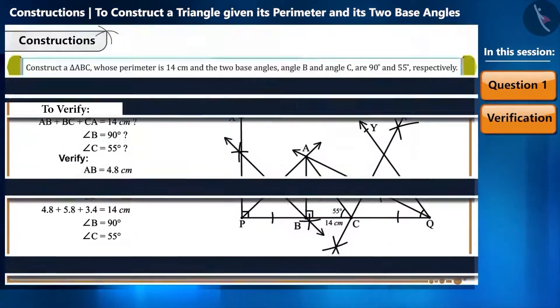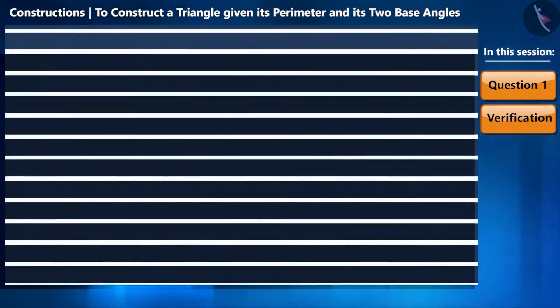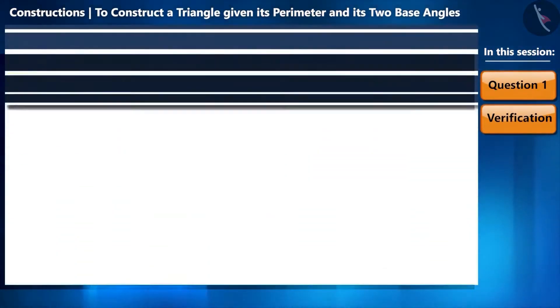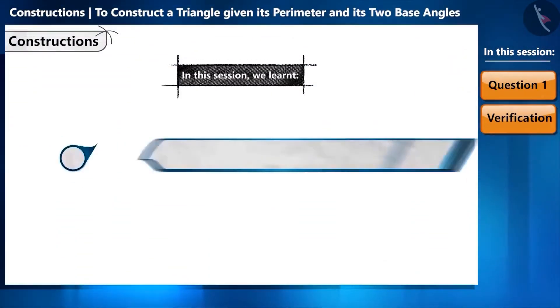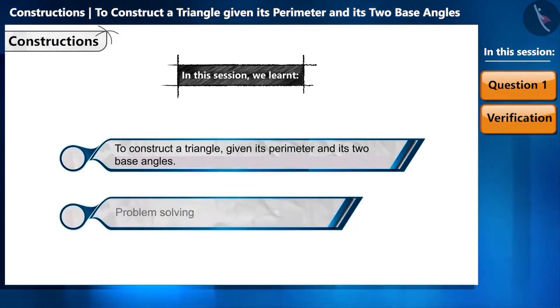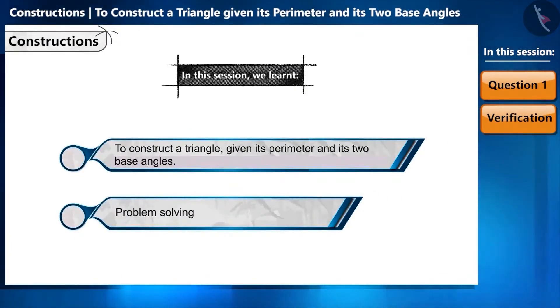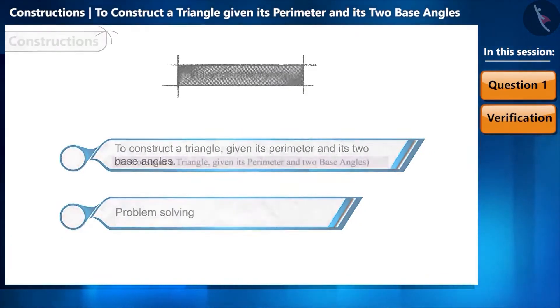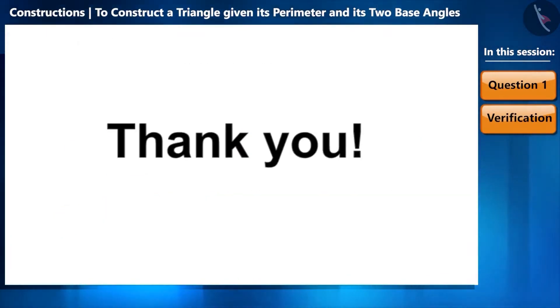That's it for today's session. In this session we solved a question based on constructing a triangle given its perimeter and its two base angles. Meet you in the next session. Thank you.